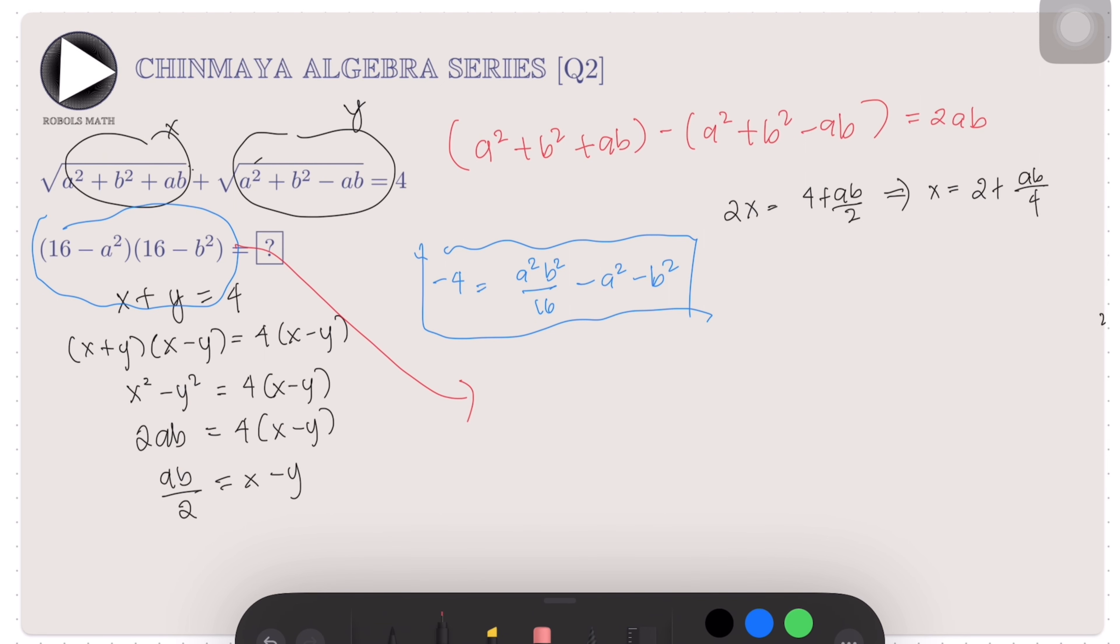We expand that: 16² - 16a² - 16b² + a²b². If we factor out 16 from the last three terms, we get 16²- 16(a² + b² - a²b²/16).